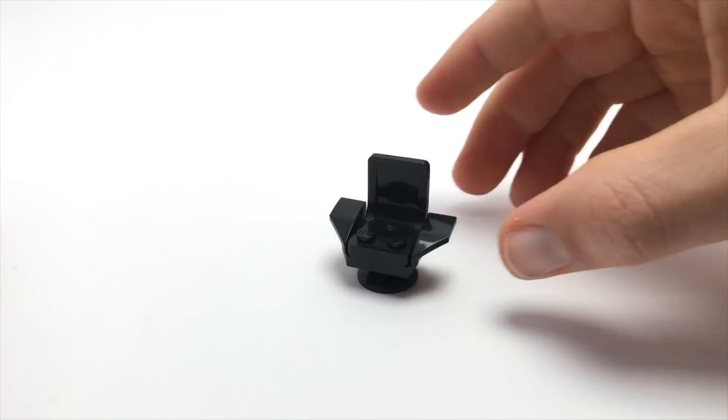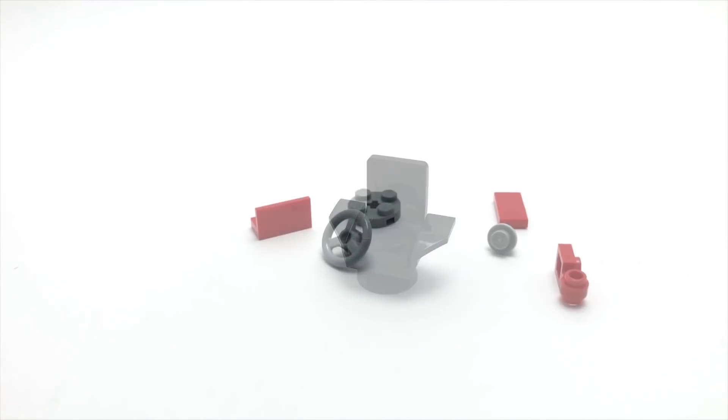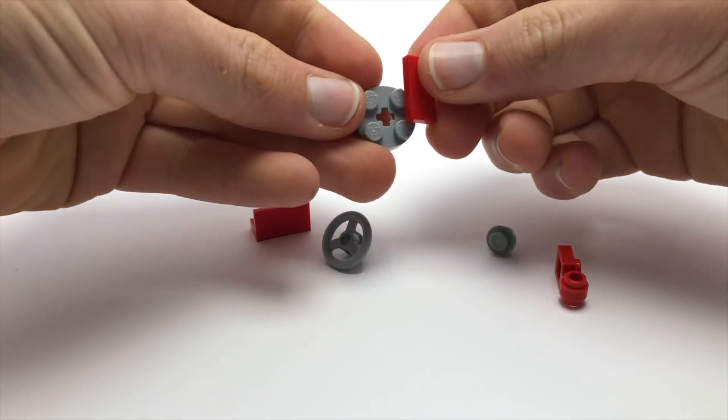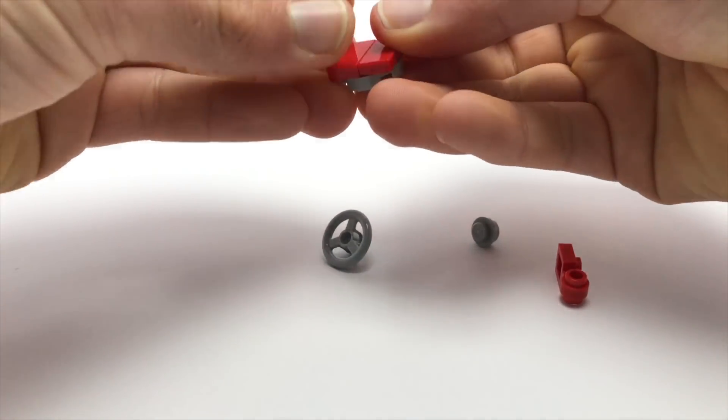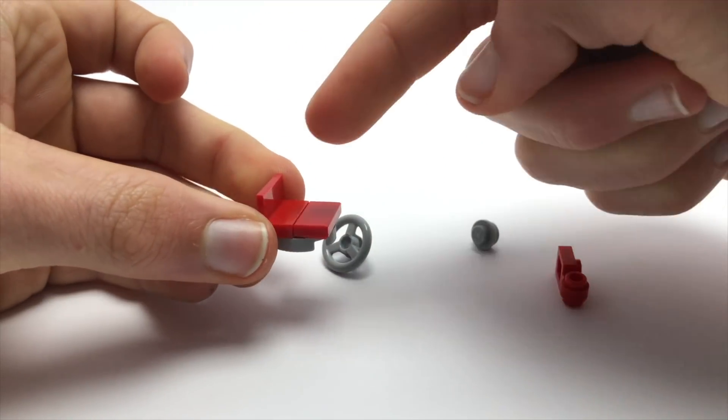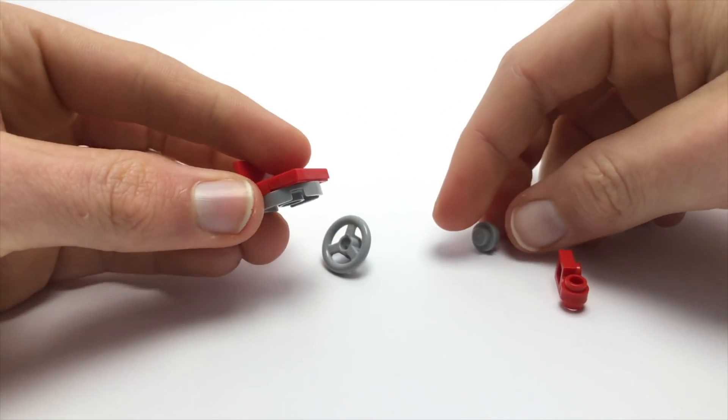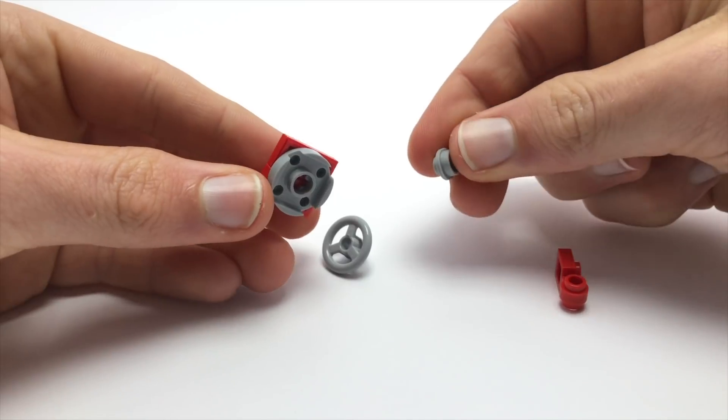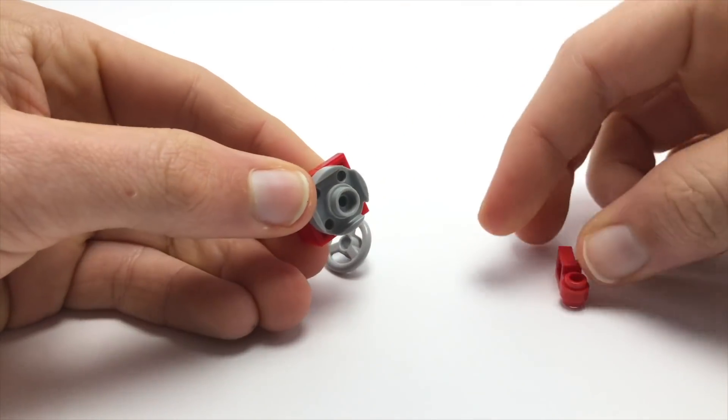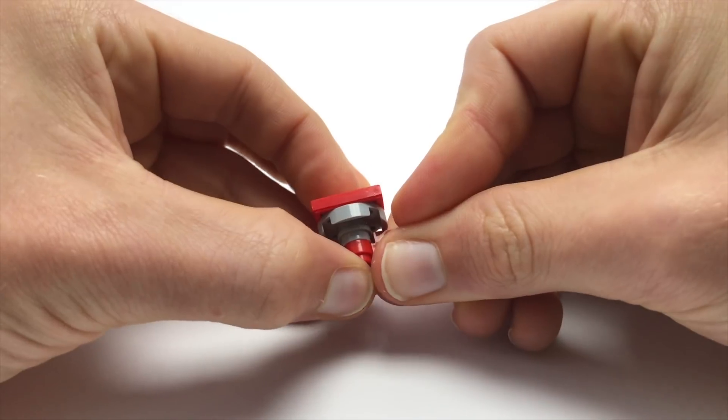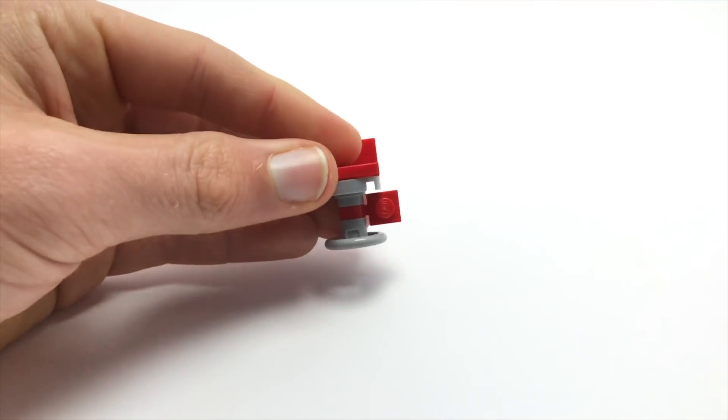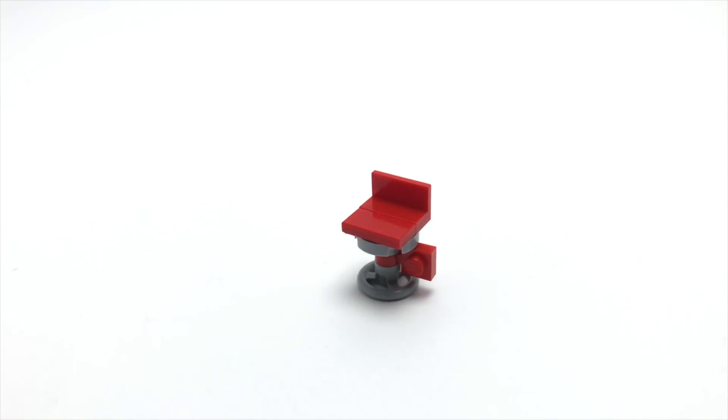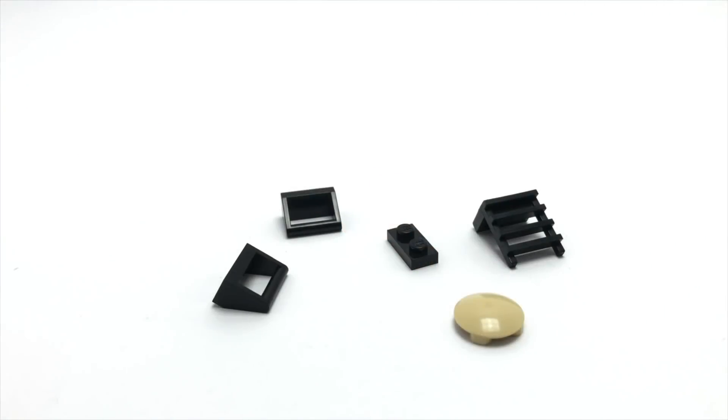This next one is kind of like a modern bar chair. Take a 2x2 round plate, then fit on a 1x2 tile and this 1x2 tile panel piece. Fit on a 1x1 stud underneath, take one of these pieces and fit that on there, then take one of these steering wheel pieces and there is your little chair. I love this design because it uses two pieces you would never expect to see on a chair.